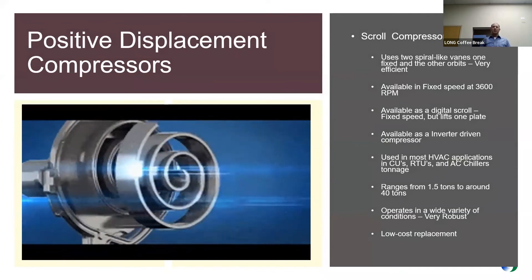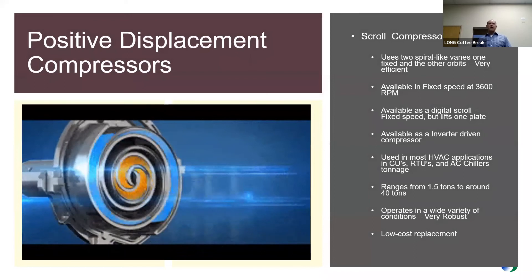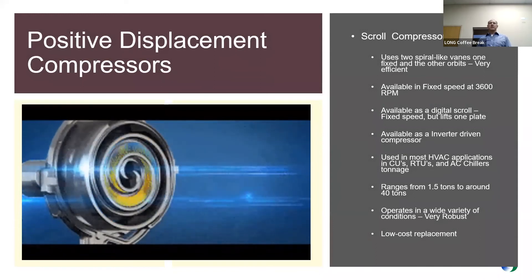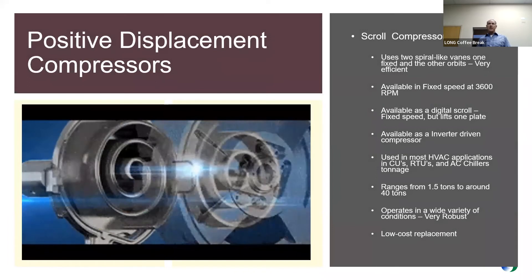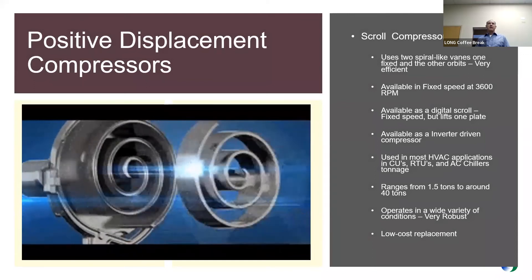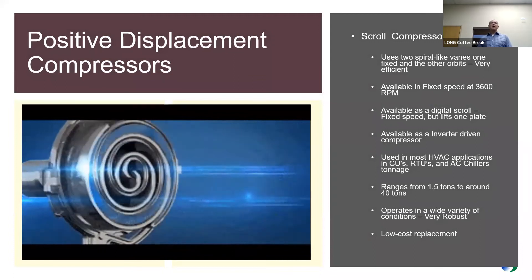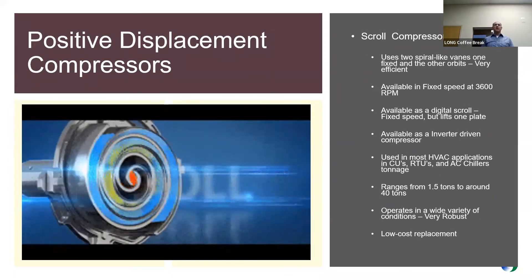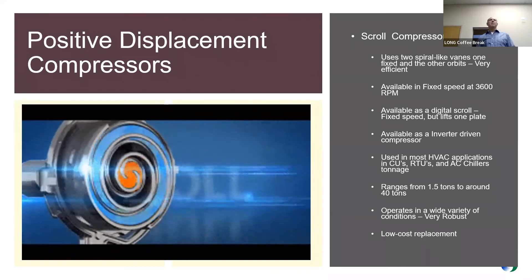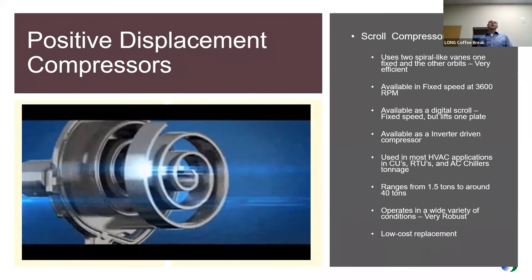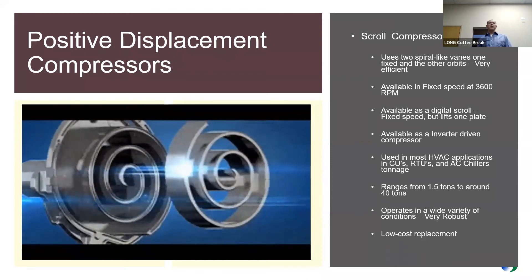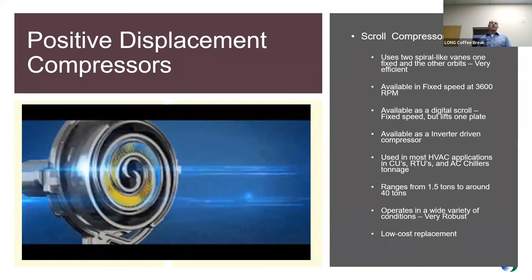Scroll compressors are probably what we utilize most currently in HVAC applications. The design is based on two spiral-like elements — one fixed and the other orbiting — to compress the gases. These are always at a fixed 3,600 RPM, though they are offered in inverter, digital scroll, or fixed-speed styles. What's nice about scroll compressors is that they're very common, pretty robust, relatively inexpensive, and a low-cost replacement. The tonnage range goes from about 1.5 tons up to about 30 or 40 tons, making them very widely used in the industry.